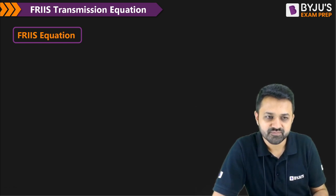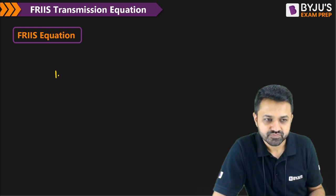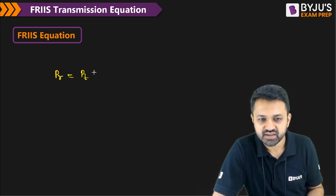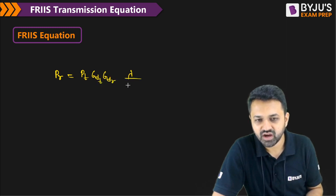Now coming to this part: when you have to include this, then the received power is P_t G_d transmitter G_d receiver lambda over 4 pi r whole square, and it is 1 minus magnitude of gamma t square times 1 minus magnitude of gamma r square.